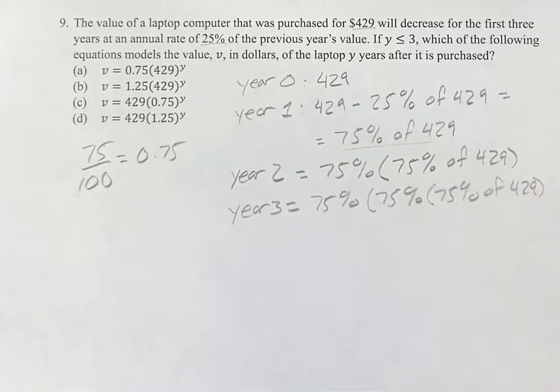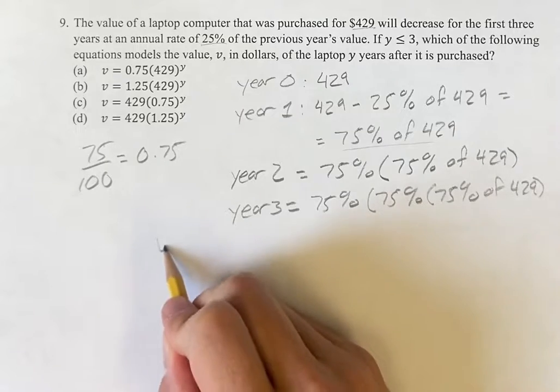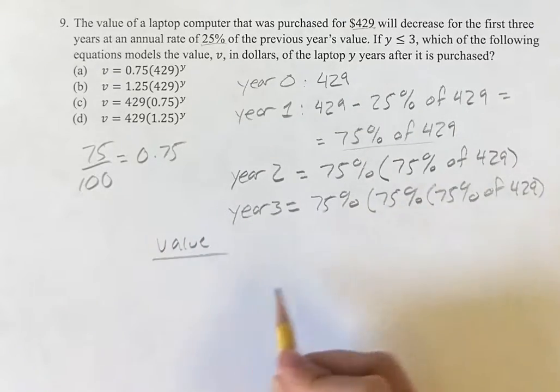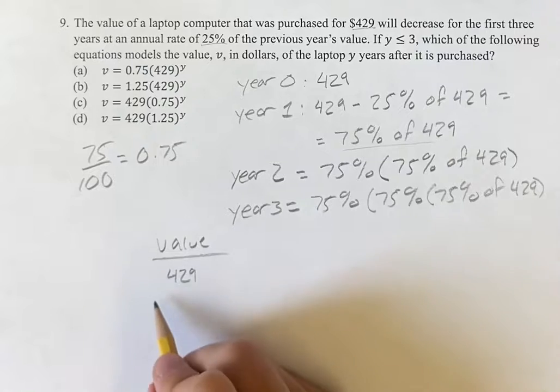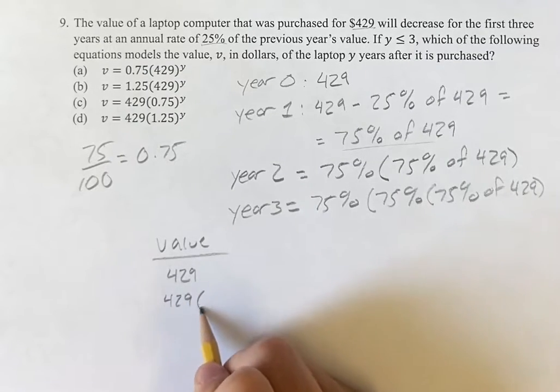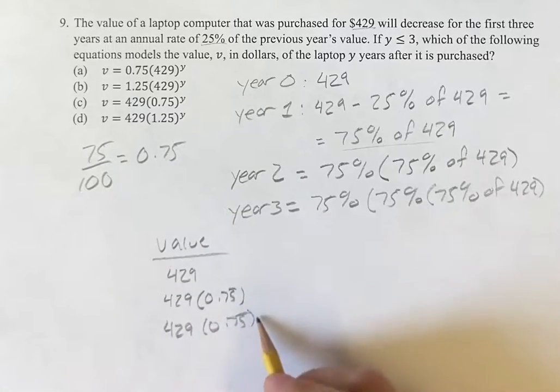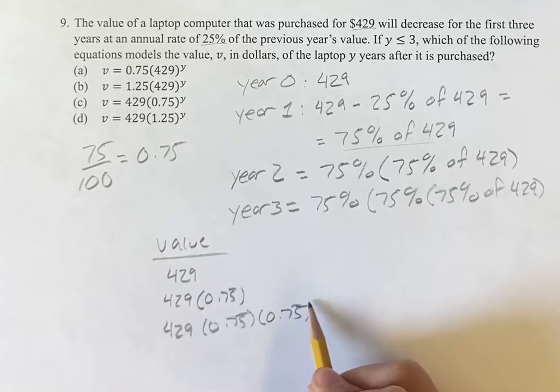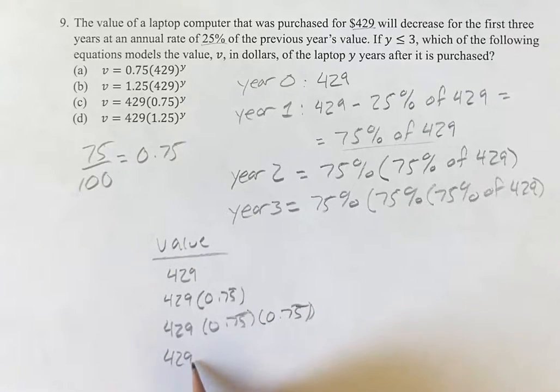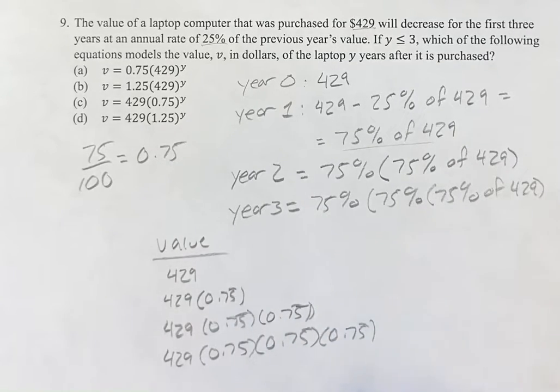That's equal to 0.75. So our value here is going from 429 to 429 times 0.75, to 429 times 0.75 times 0.75. And now you can see the pattern more clearly and something close to what we're looking at here.